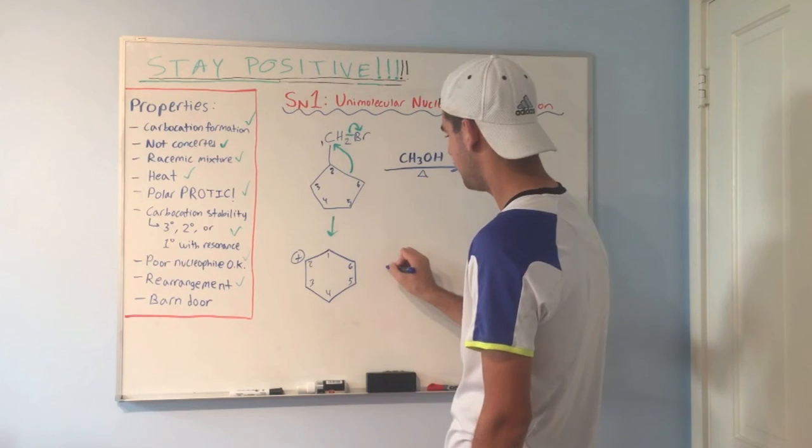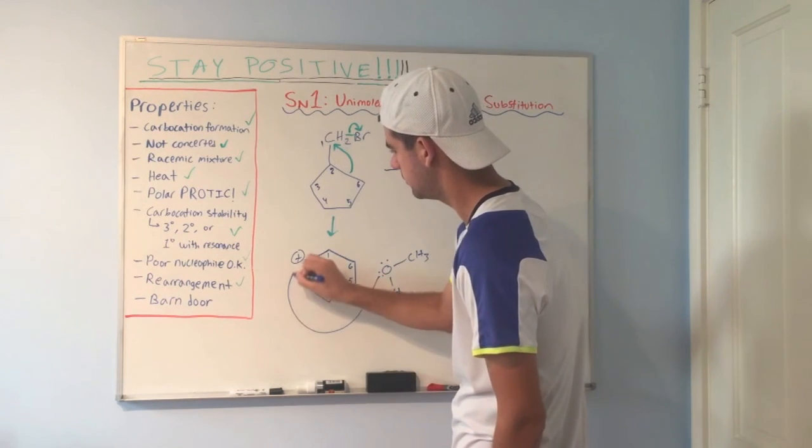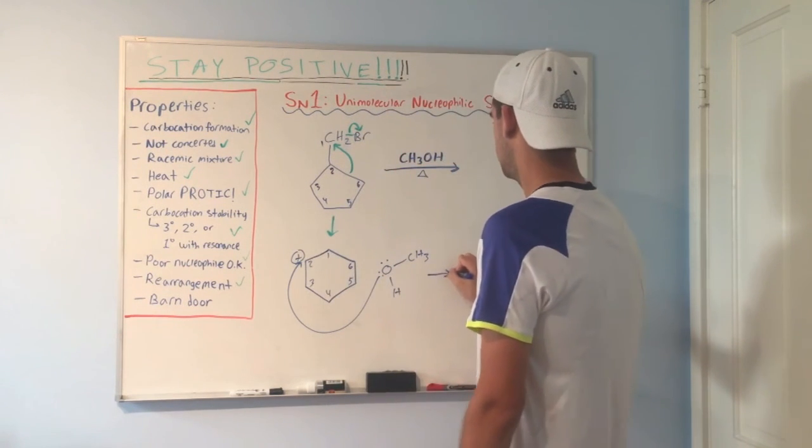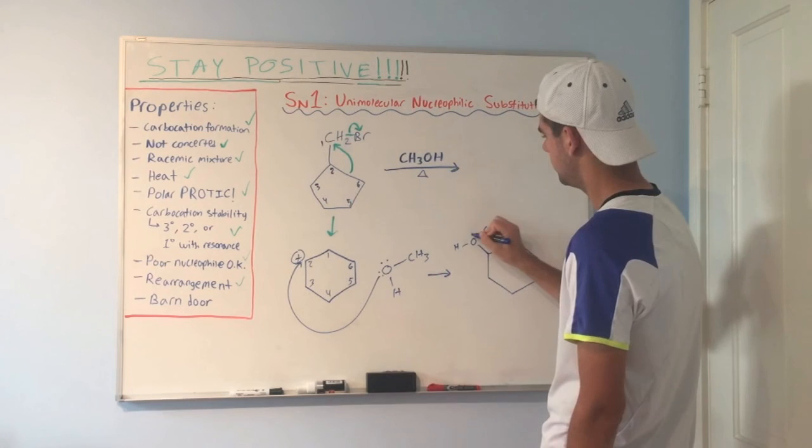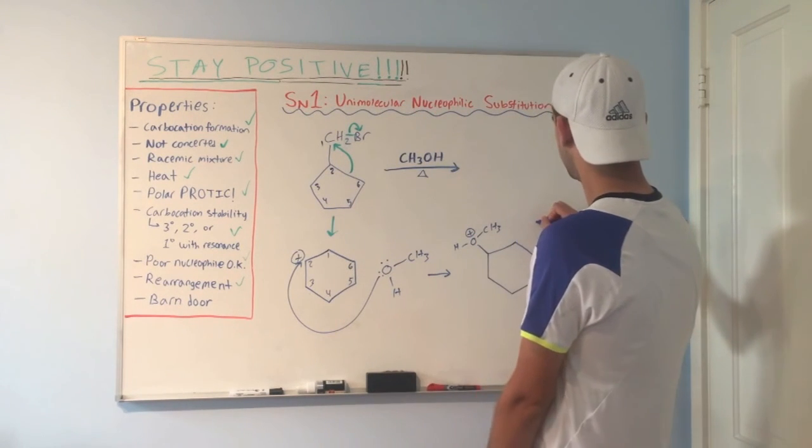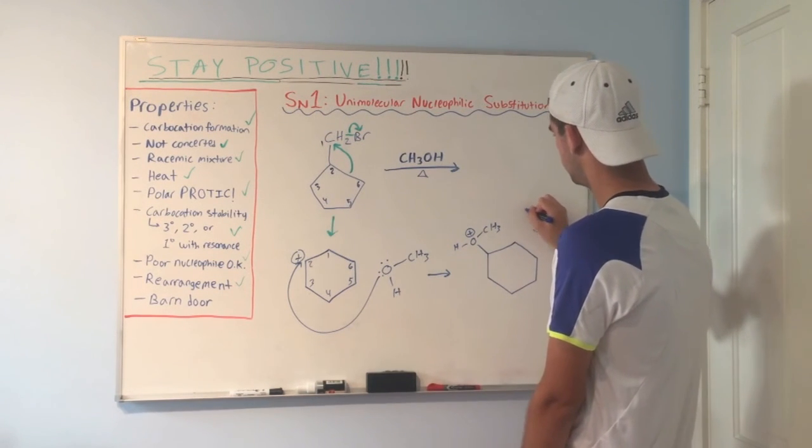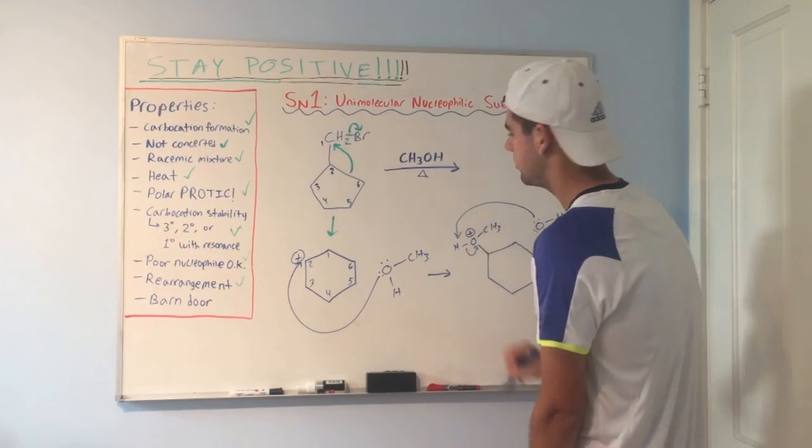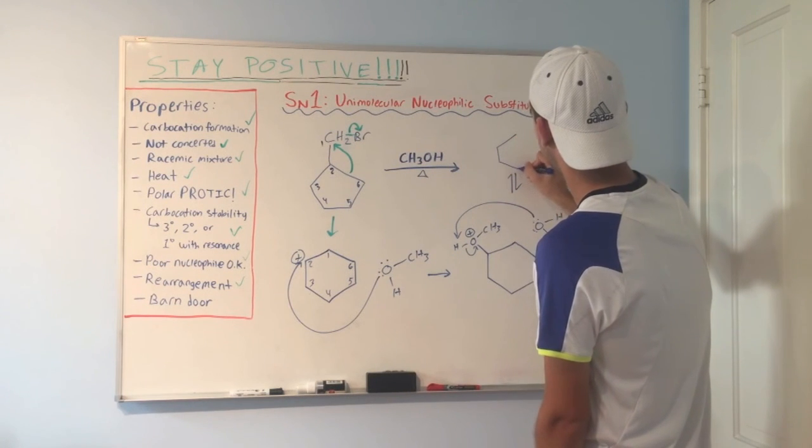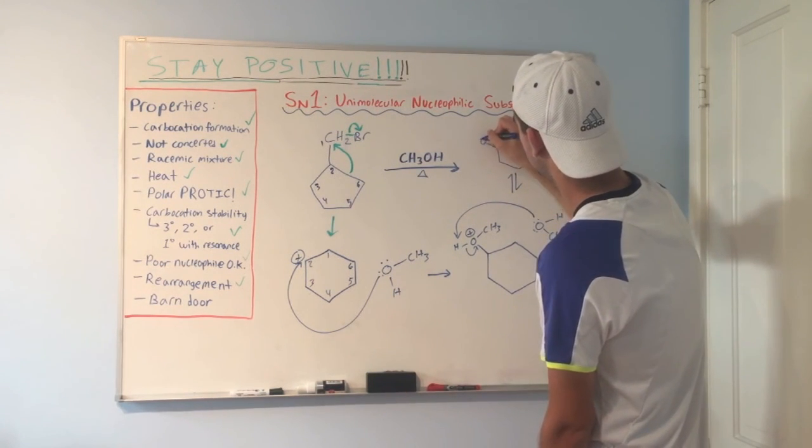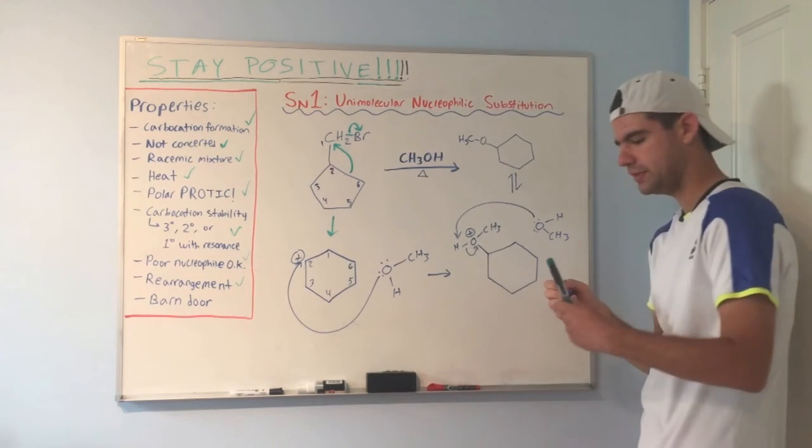Now we're going to get methanol to attack just like before. And we're going to need a deprotonation step, because now we have a positive formal charge because oxygen is three bonds. We need to deprotonate that with another methanol molecule, just like we said before. Grab that hydrogen, send those electrons over to oxygen. And we have our final product. It looks something like this. So that's the barn door.